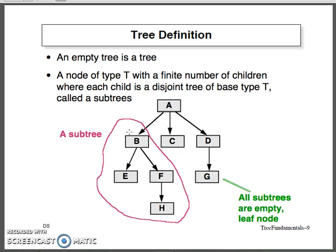Coming to the tree definition: an empty tree has no nodes, no elements — nothing. Whereas if we have a few elements, that tree is represented as capital T, which will have a finite number of children, where each child is a disjoint tree — meaning each child has its own subtree. If there are no children for a node, we call it a leaf node with no further extension. The part of a tree is also called a subtree, and subtrees may also be empty in the case of a leaf node.